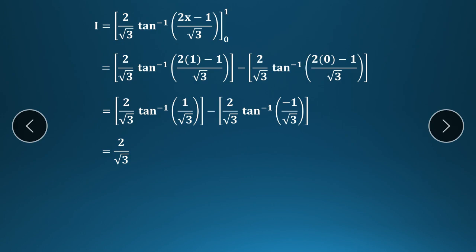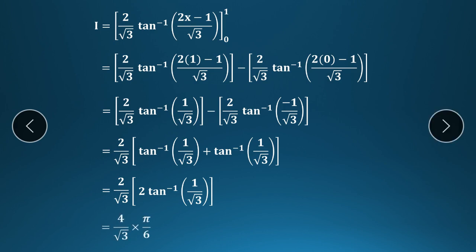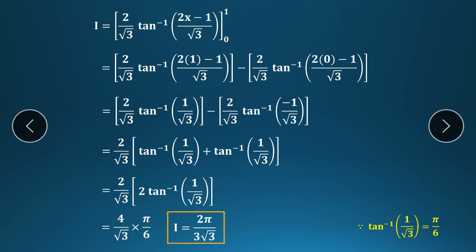Taking (2/√3) common: tan⁻¹(1/√3) − (−tan⁻¹(1/√3)) = 2 tan⁻¹(1/√3). Now tan θ = 1/√3 when θ = π/6, so tan⁻¹(1/√3) = π/6. Therefore: (2/√3) × 2 × π/6 = 4π/(6√3) = 2π/(3√3).